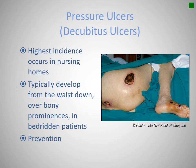Pressure ulcers occur from laying in one position for too long, anywhere the skin is on a hard surface for a prolonged period. They're common in nursing homes and typically develop from the waist down over bony prominences. The treatment is mainly prevention — once bed sores or pressure ulcers start, they often require wound clinics and may never fully heal. The best treatment is prevention and education of nursing home staff to ensure they're turning and rotating patients hourly or bi-hourly.